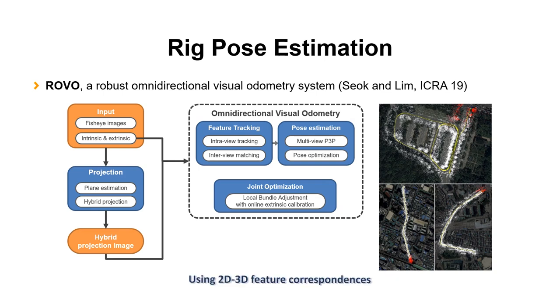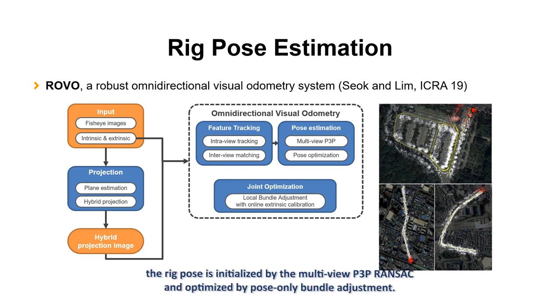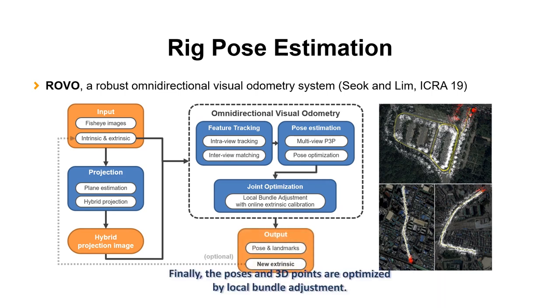Using 2D-3D feature correspondences, the rig pose is initialized by the multi-view P3P RANSAC and optimized by pose-only bundle adjustment. Finally, the poses and 3D points are optimized by local bundle adjustment.